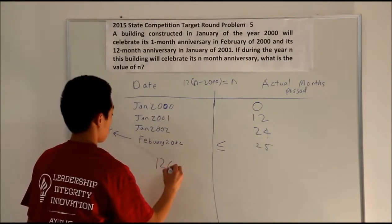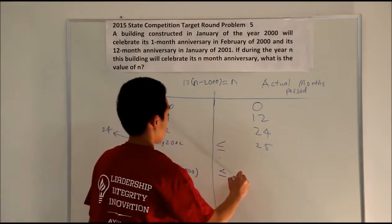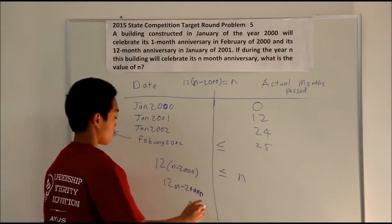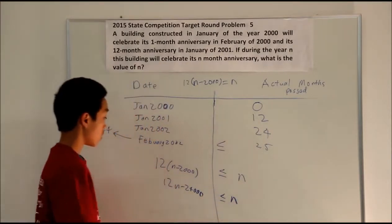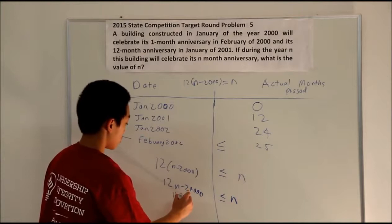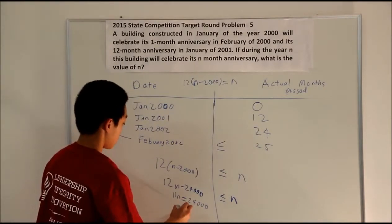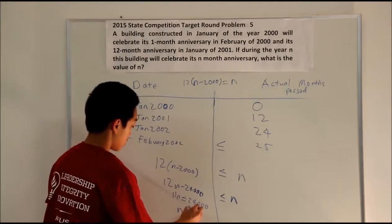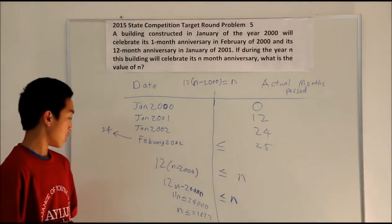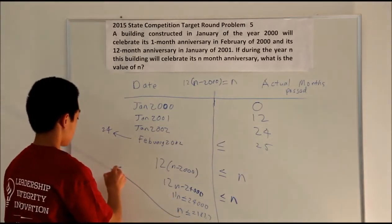Bringing this equation together, we get the inequality less than or equal to N. Using this derivative property, we subtract N from both sides, add 24,000 to both sides, divide both sides by 11, and calculate that N is less than or equal to 2,181.7.